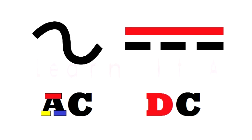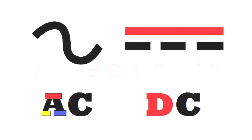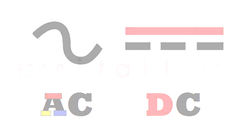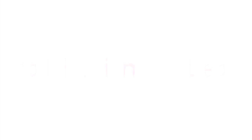If the induced current in a conductor flows in one direction only all the time, then that is called DC or direct current. Let's see the DC current in action.